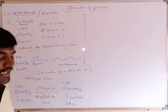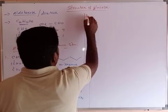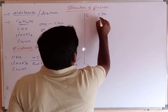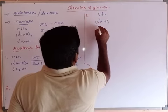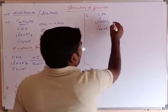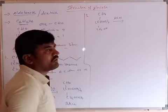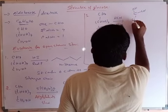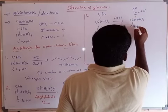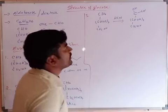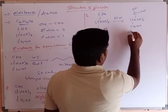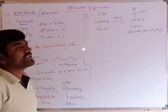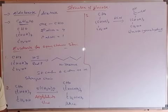The third evidence is confirmation of the aldehyde group. Glucose reacts with hydrogen cyanide (HCN) to form glucose cyanohydrin. Glucose cyanohydrin indicates the presence of the aldehyde group in the open chain structure of glucose.